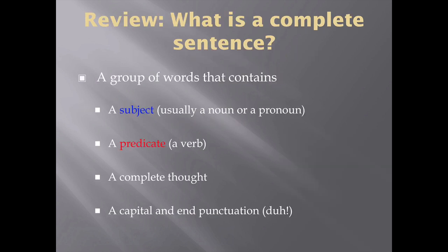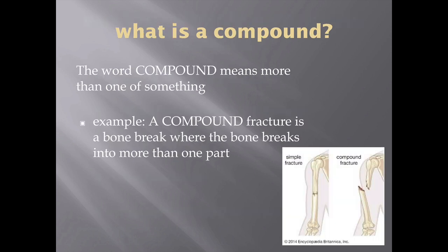Let's do a quick review. What is a complete sentence? A complete sentence is a group of words that contains a subject, typically a noun or a pronoun, a predicate, always a verb, and a complete thought, and then obviously a capital and end punctuation.